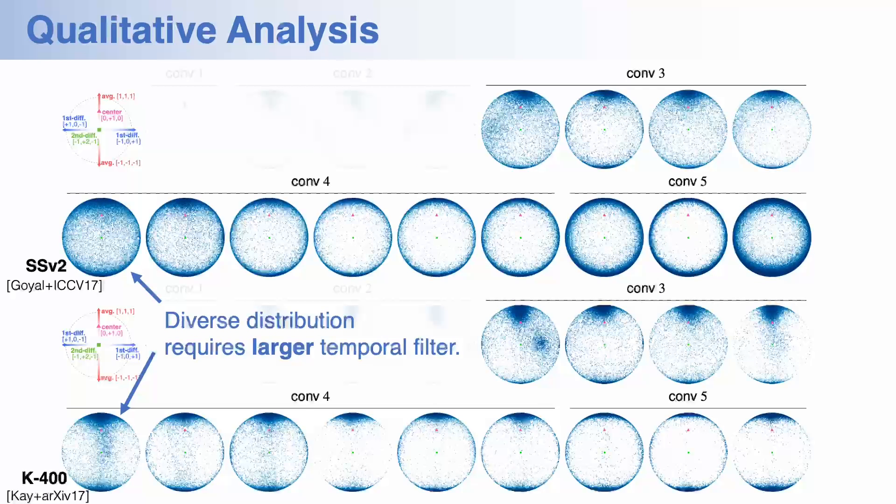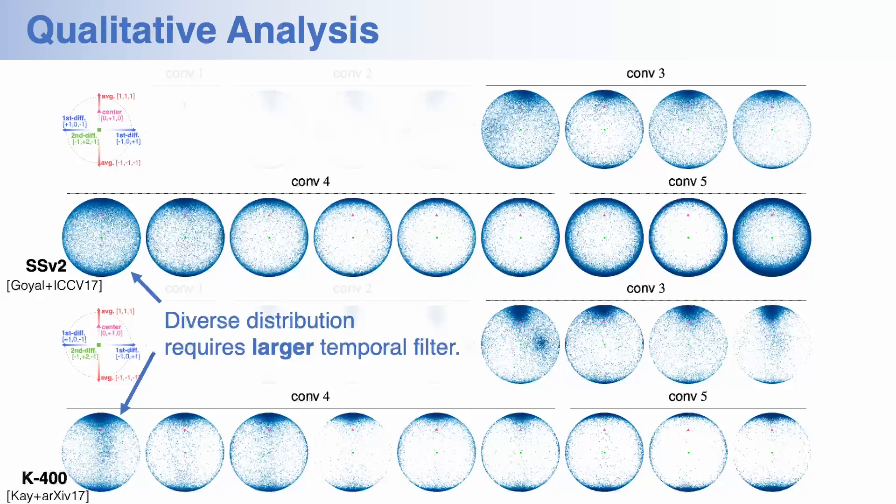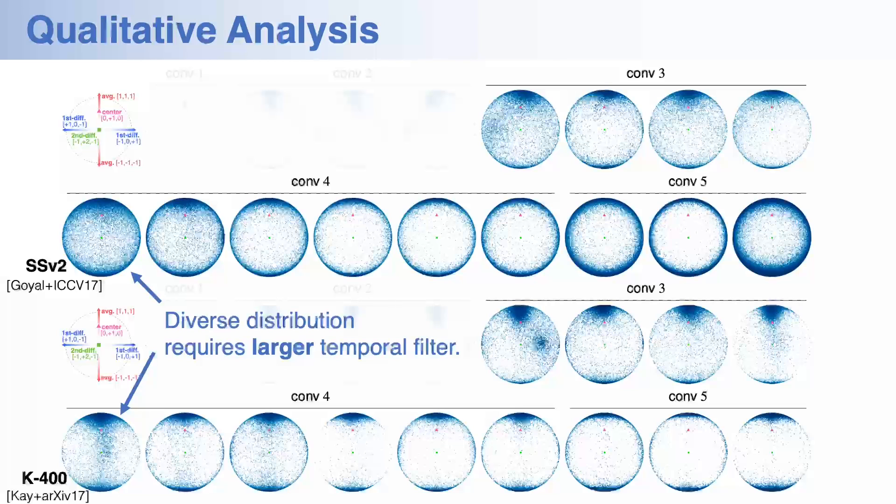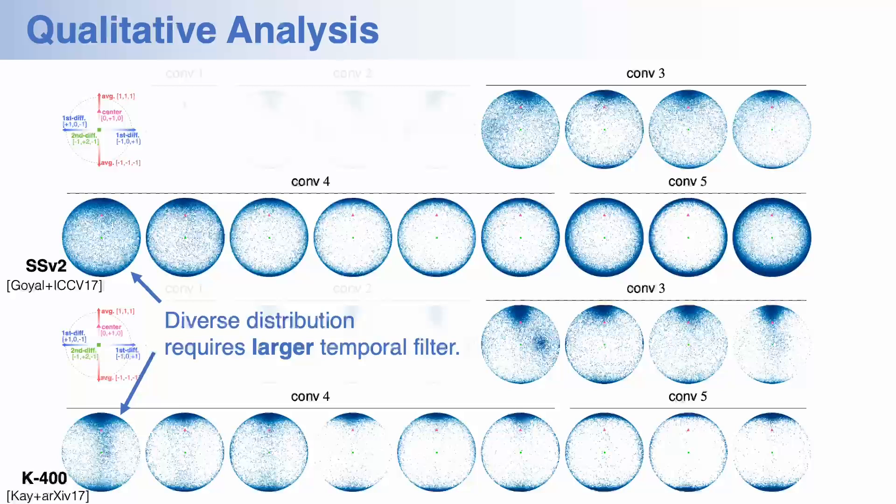Next, we can see that temporal filters are diversely distributed at the deeper layers. It means that the deeper layers encode various types of temporal dynamics by integrating the appearance features extracted by the shallower layers.